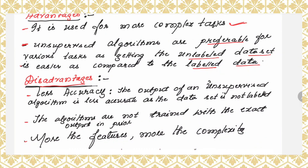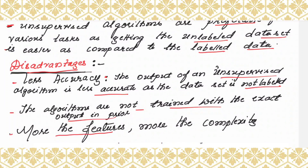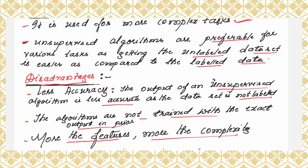Regarding disadvantages of unsupervised learning: less accuracy — the output of an unsupervised algorithm is less accurate as the dataset is not labeled. The algorithm is trying to learn by itself because there are no labels mentioned for the data, so there are chances that the output will be less accurate. The algorithms are not trained with the exact output in prior. Also, if your dataset has more features, then definitely more will be the complexity.